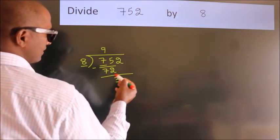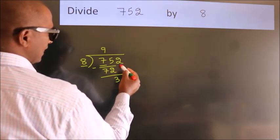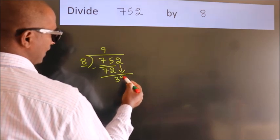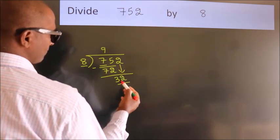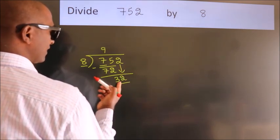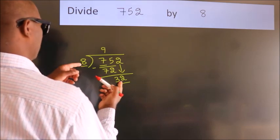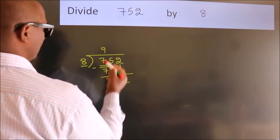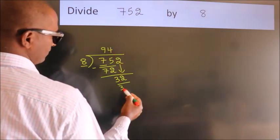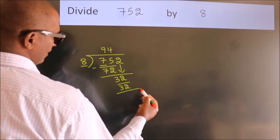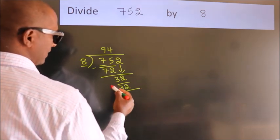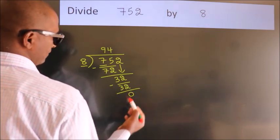After this, bring down the beside number. So 2 comes down, giving us 32. When do we get 32 in the 8 times table? 8 fours are 32. Now we subtract. We get 0.